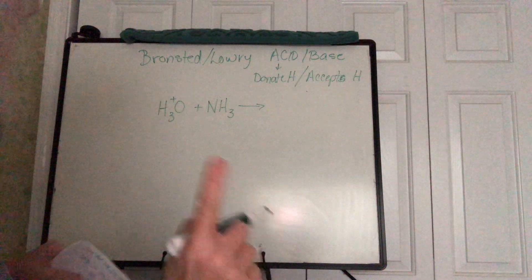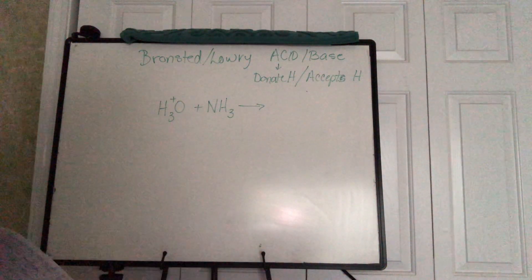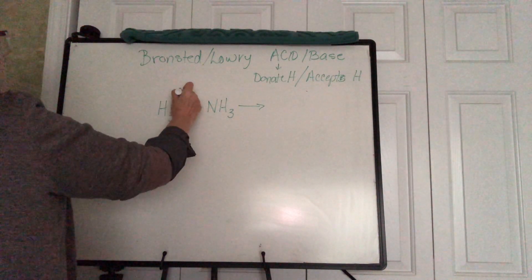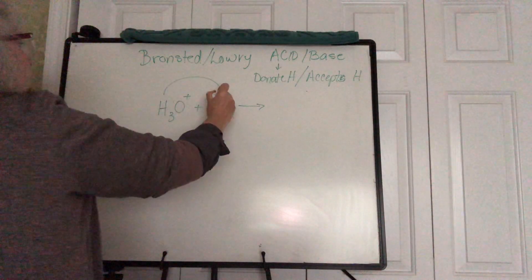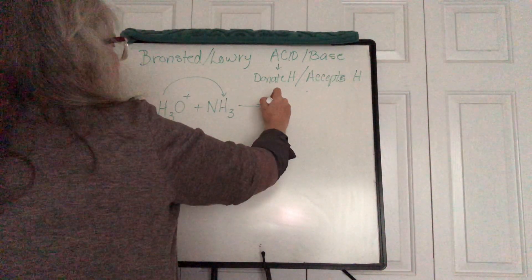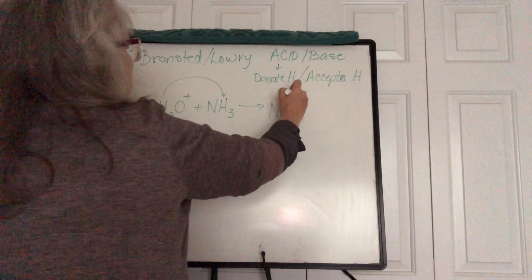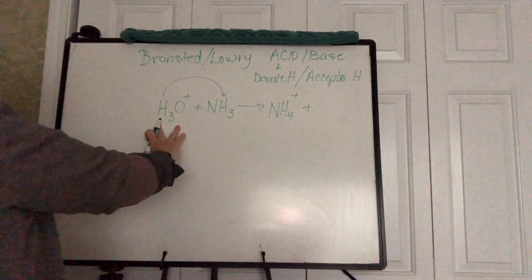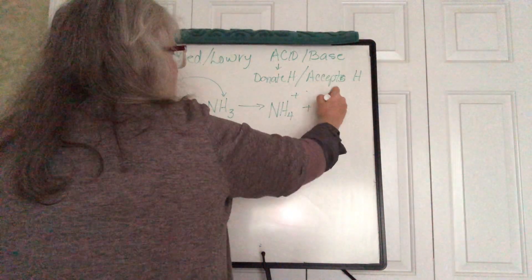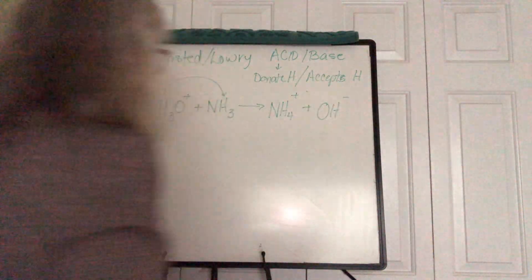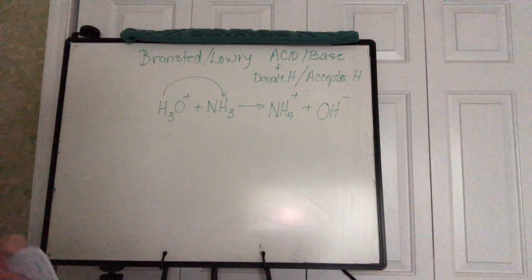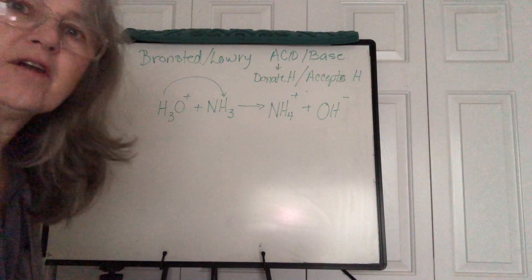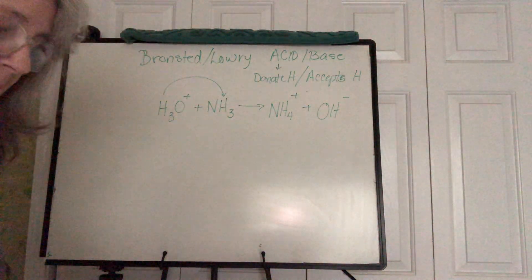You should be able to say: H3O+ is the acid, so it's going to donate one of its hydrogens to the ammonia. Now it's no longer ammonia — it's ammonium with a plus charge, a polyatomic ion. And what's left over after you take one H away is our hydroxide ion. That's pretty easy, and we've been seeing that all along.